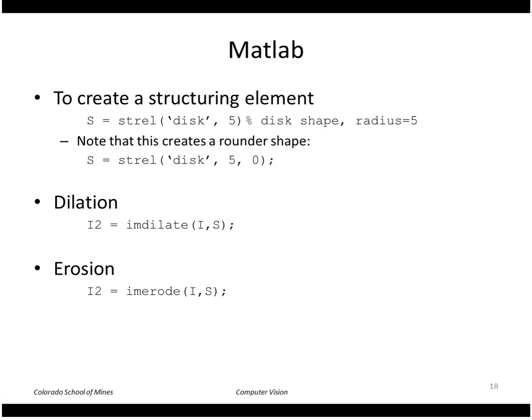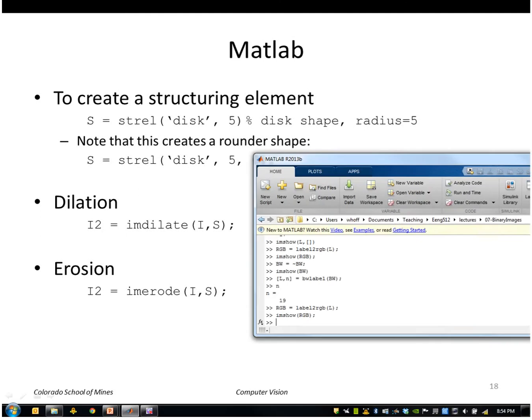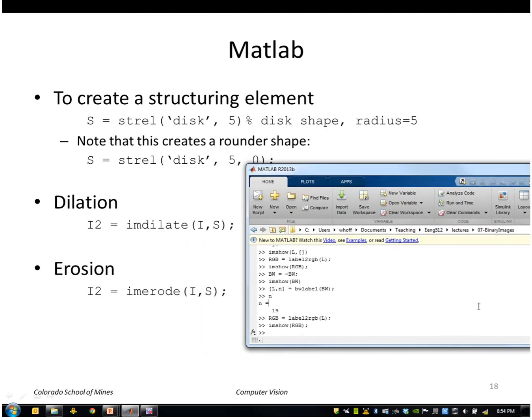Just to show how this works in MATLAB. In MATLAB we can create a structuring element using this function strel or structuring element. So we'll create a disk of radius 5 using this. So it's really just a binary image which is in this case I guess 11 by 11.